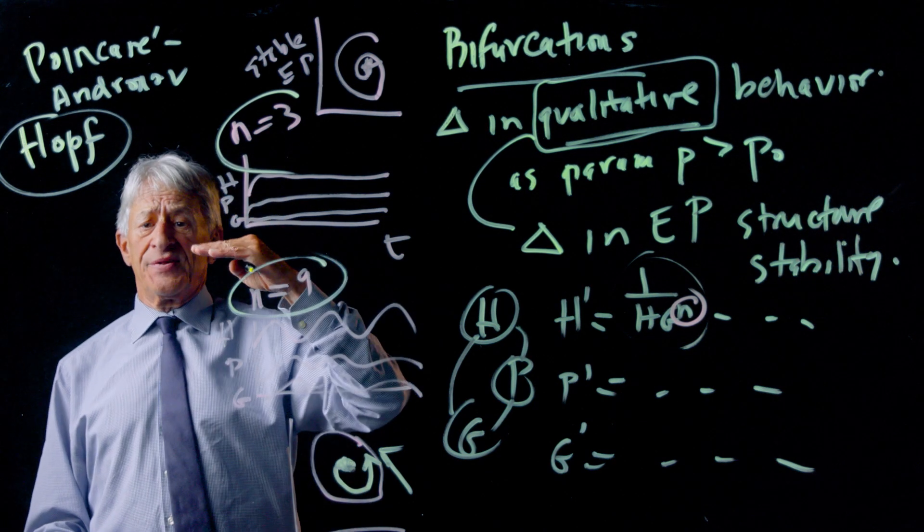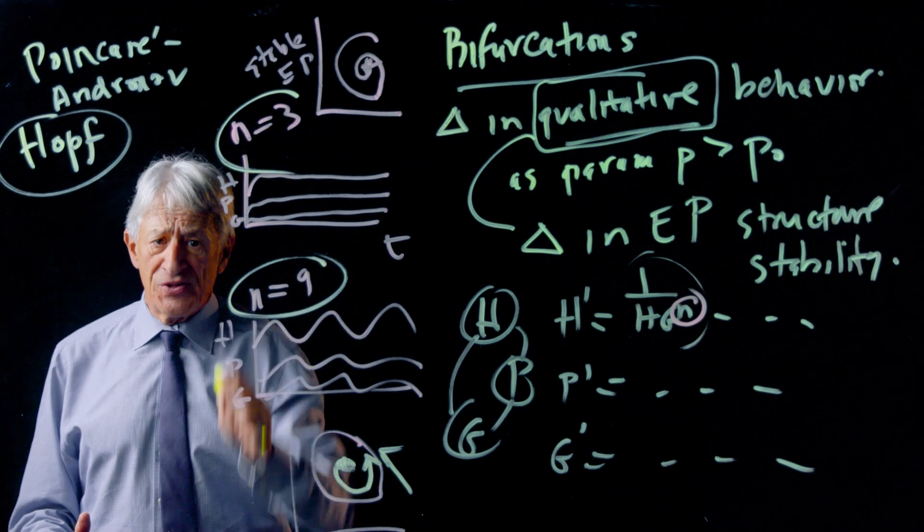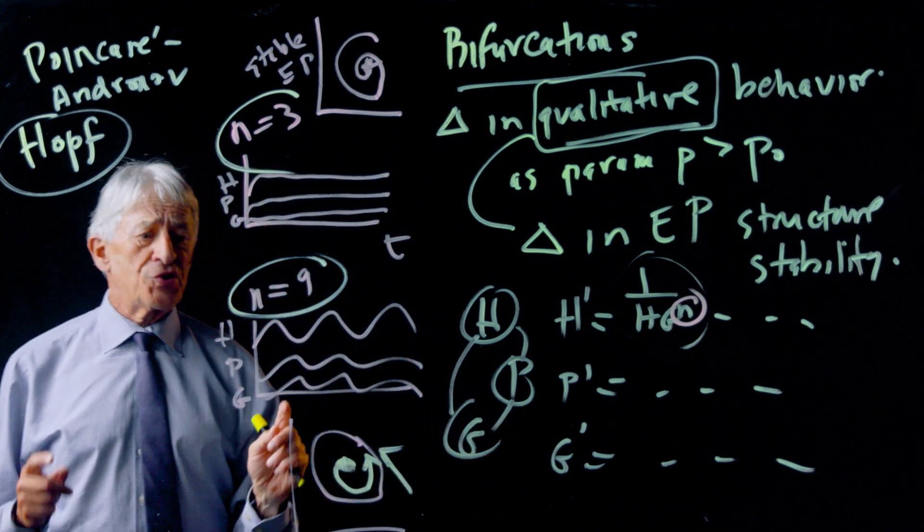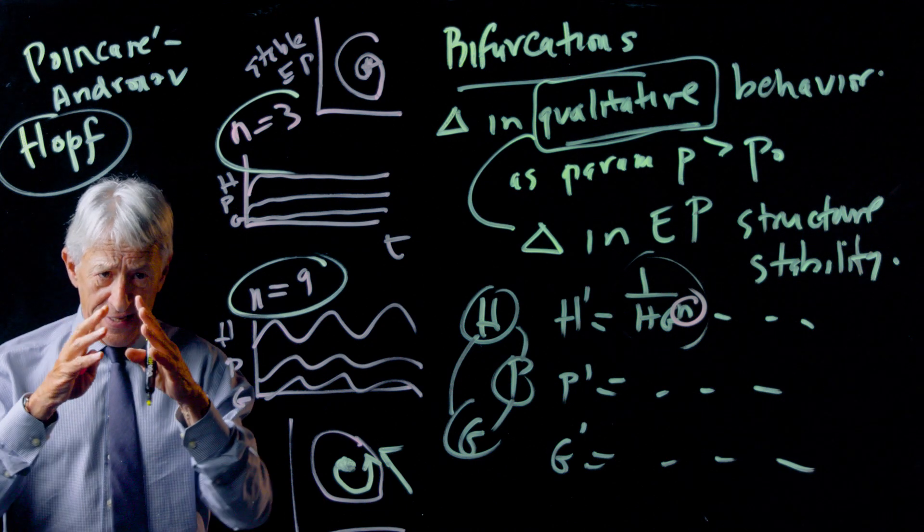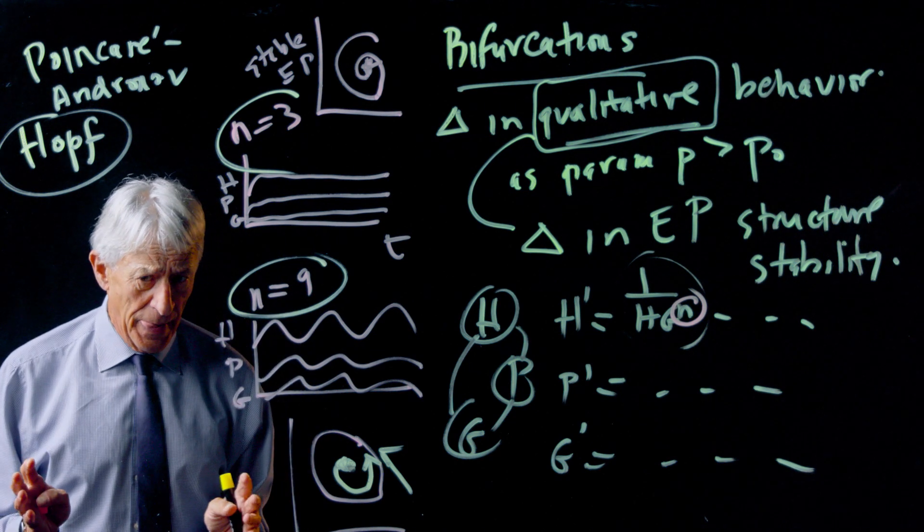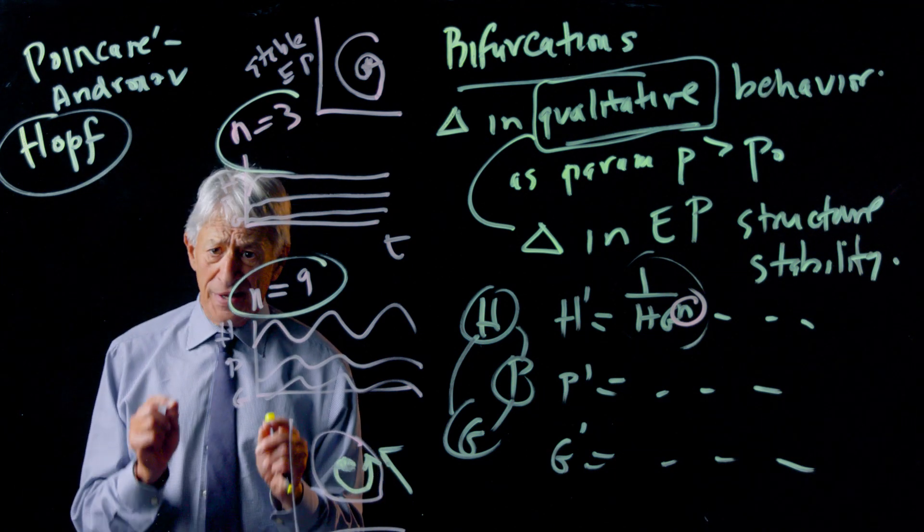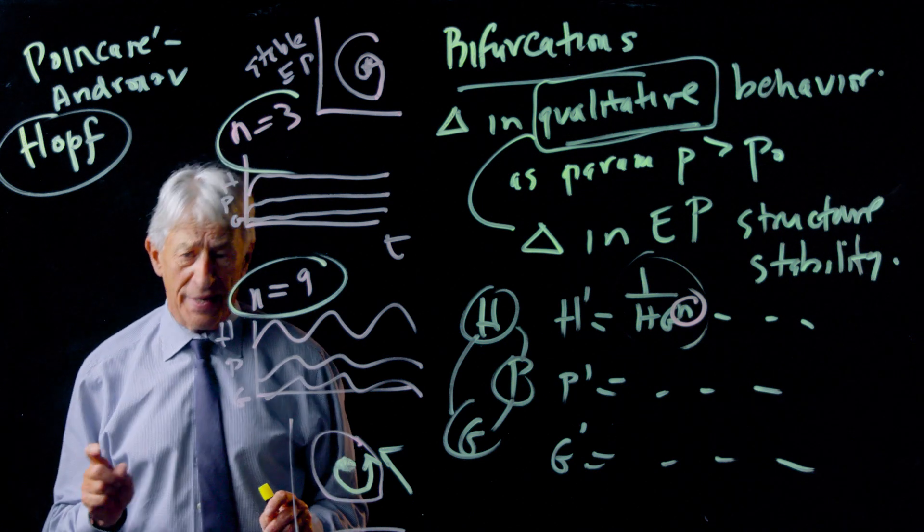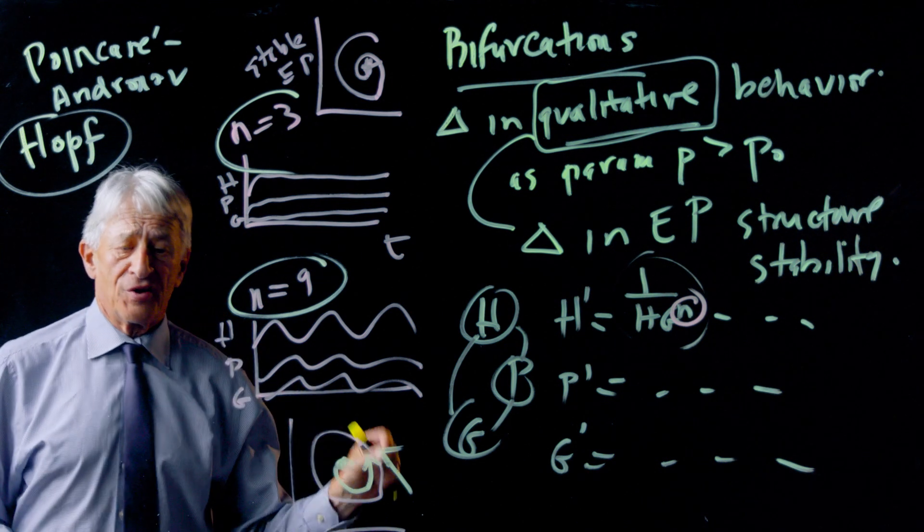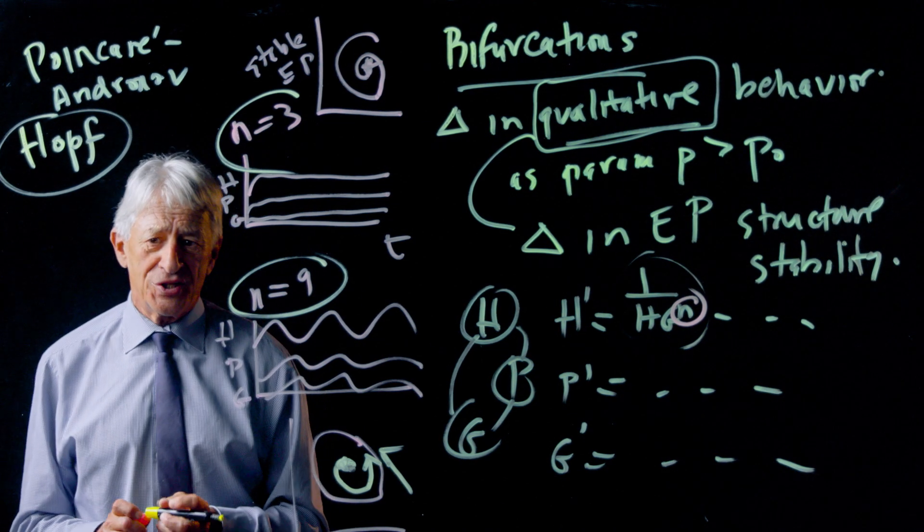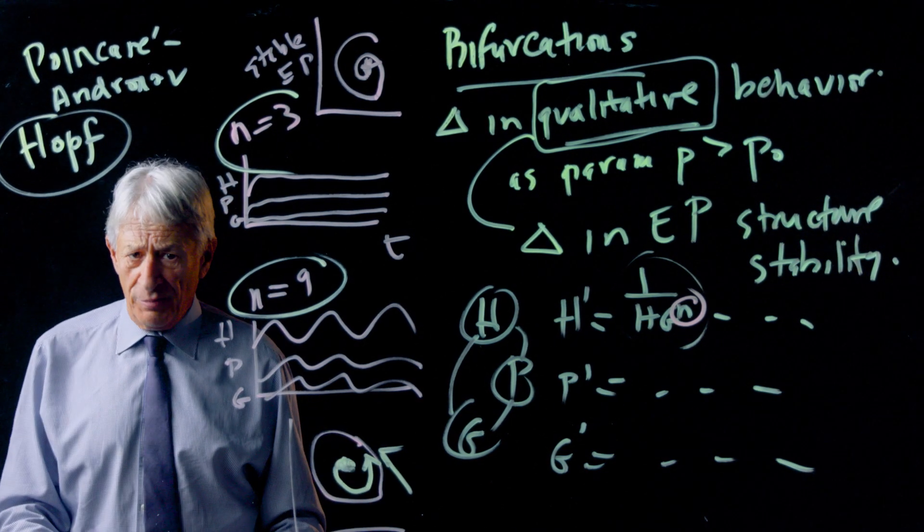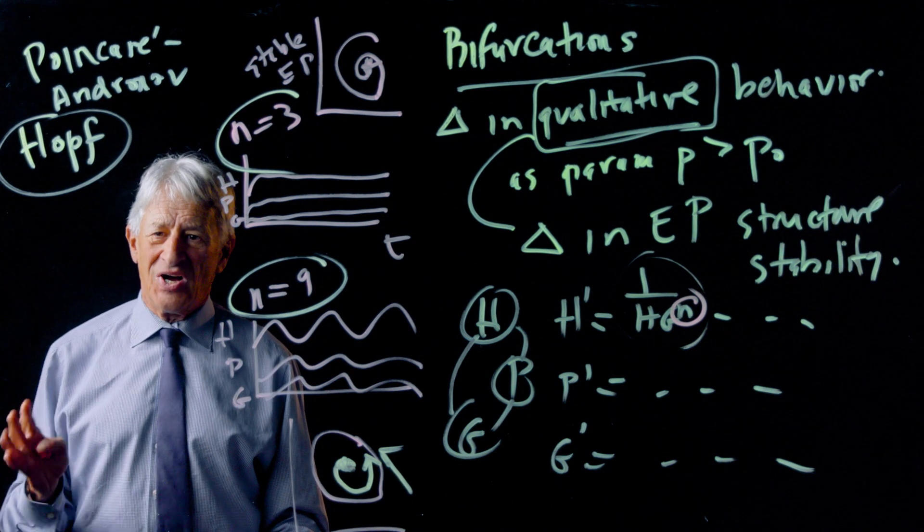But what is a Hopf bifurcation? It's a passage from a stable equilibrium to a stable oscillation. And you saw it in the HPG. You saw it in the muscle stretch reflex. When the time delay got long, the muscle stretch reflex went into oscillation. You saw it in the insulin glucose case when there was a delay in the production of insulin by glucose. The system went into oscillation. Every one of those is a Hopf bifurcation. And it was also a Hopf bifurcation that brought down the Tacoma Narrows Bridge. So Hopf bifurcation is an extremely important subject. It's the birth of an oscillation.